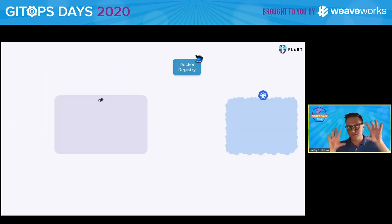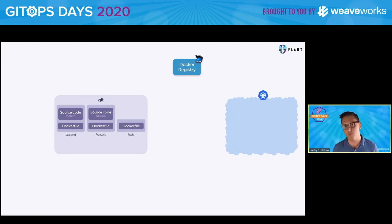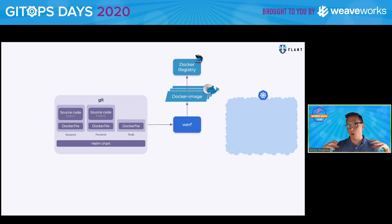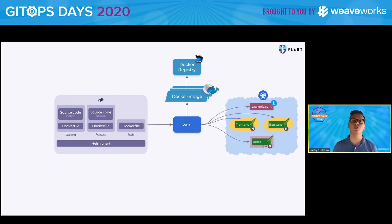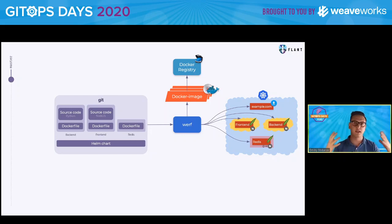So, how it works: of course we have Kubernetes, Docker registry, and a Git repository. In the Git repository we may have multiple applications — in my example, front-end and back-end. For both of them we have different source bases and different Dockerfiles. We also have a Dockerfile for building Redis and a Helm chart. When we run Werf the first time, it builds all the images and converges Kubernetes to the desired state — on the first commit in the Git repository, Werf does the initial setup.